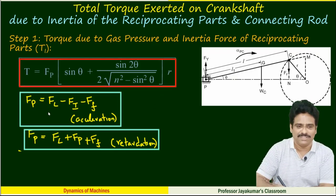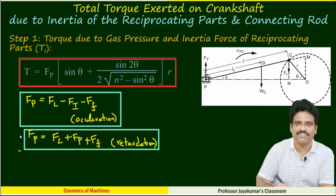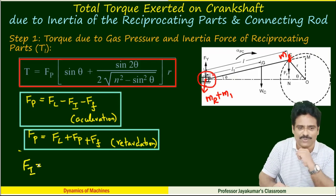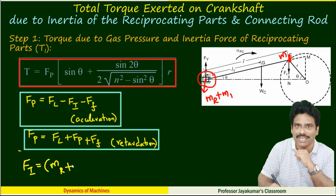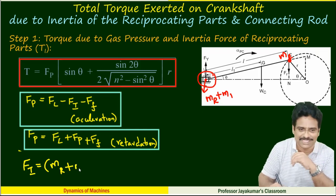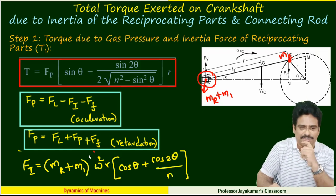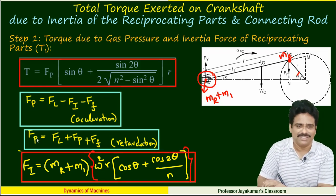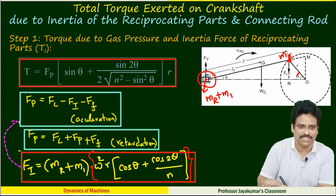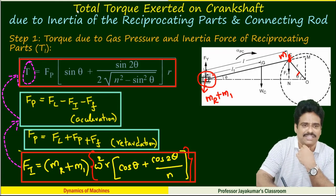To find FP, we use FL minus FI minus FF. FI equals mass times acceleration of the reciprocating parts. Here, the mass is the reciprocating parts mass plus the portion of connecting rod mass placed at point P, which is m1. The acceleration of the piston formula is used here. First find FI, substitute into the FP formula, then substitute into the torque expression to get T1. If gas pressure is not given, consider inertia of the reciprocating parts alone.